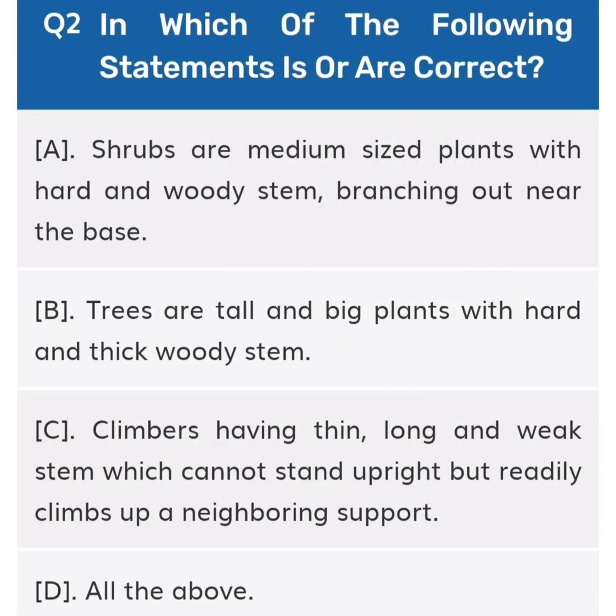Question number two: Which of the following statements is or are correct? Option A: Shrubs are medium-sized plants with hard and woody stem branching out near the base. Option B: Trees are tall and big plants with hard and thick woody stem. Option C: Climbers have a thin, long and weak stem which cannot stand upright but readily climbs up a neighbouring support.